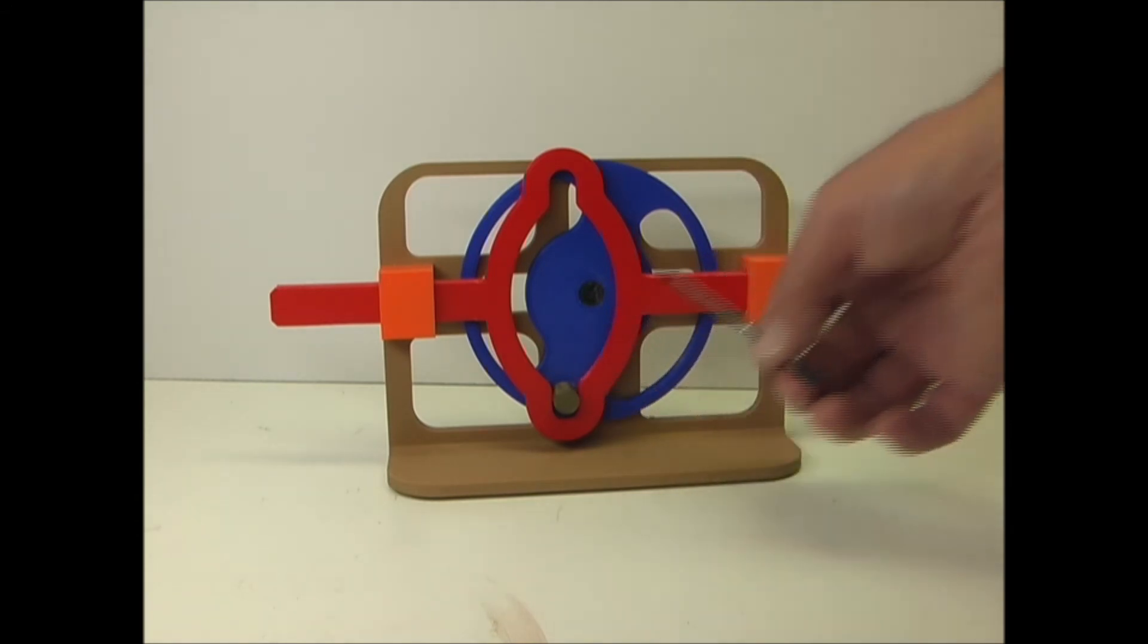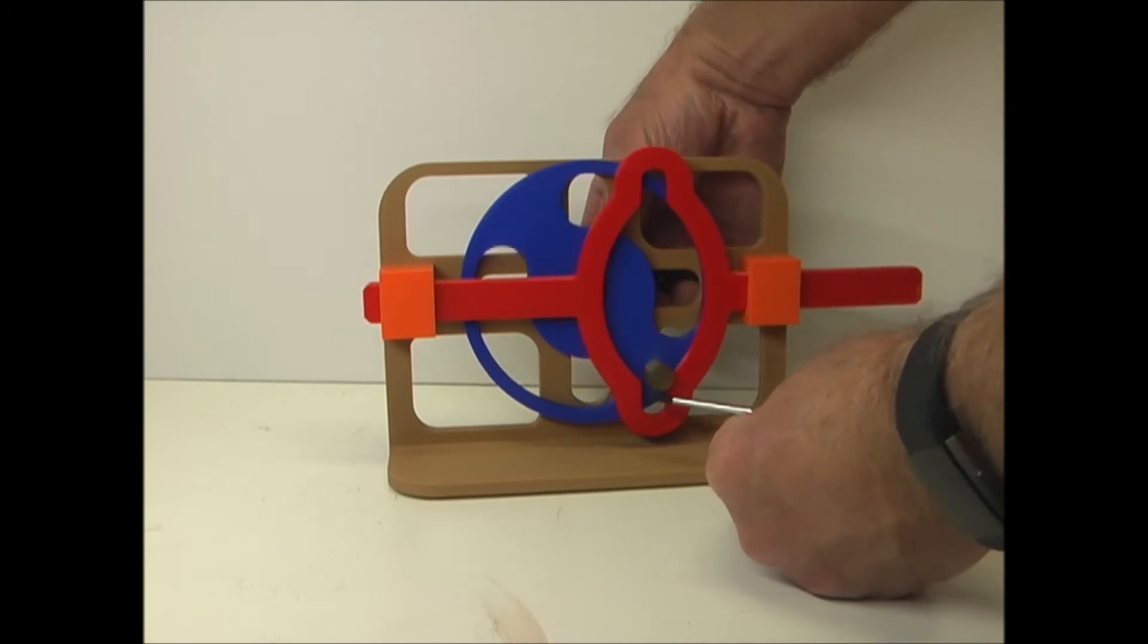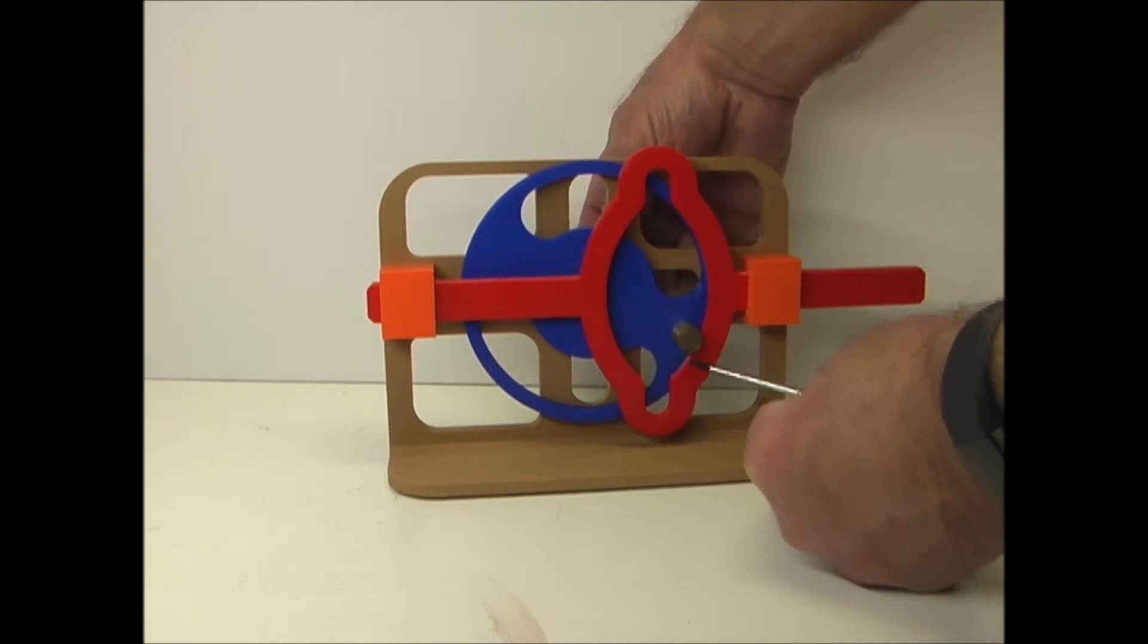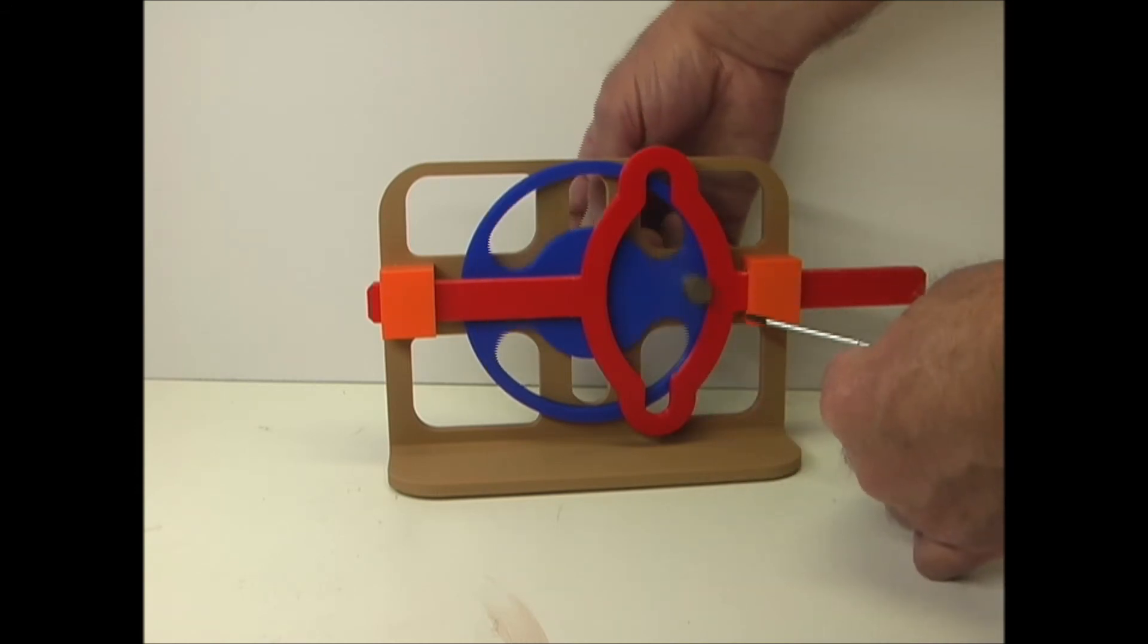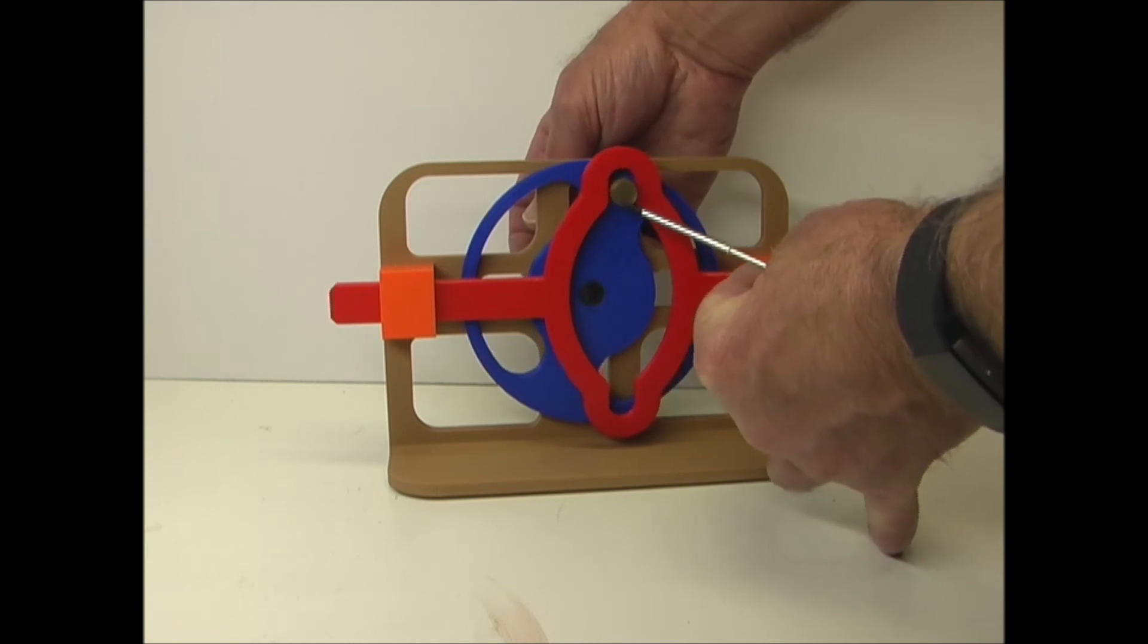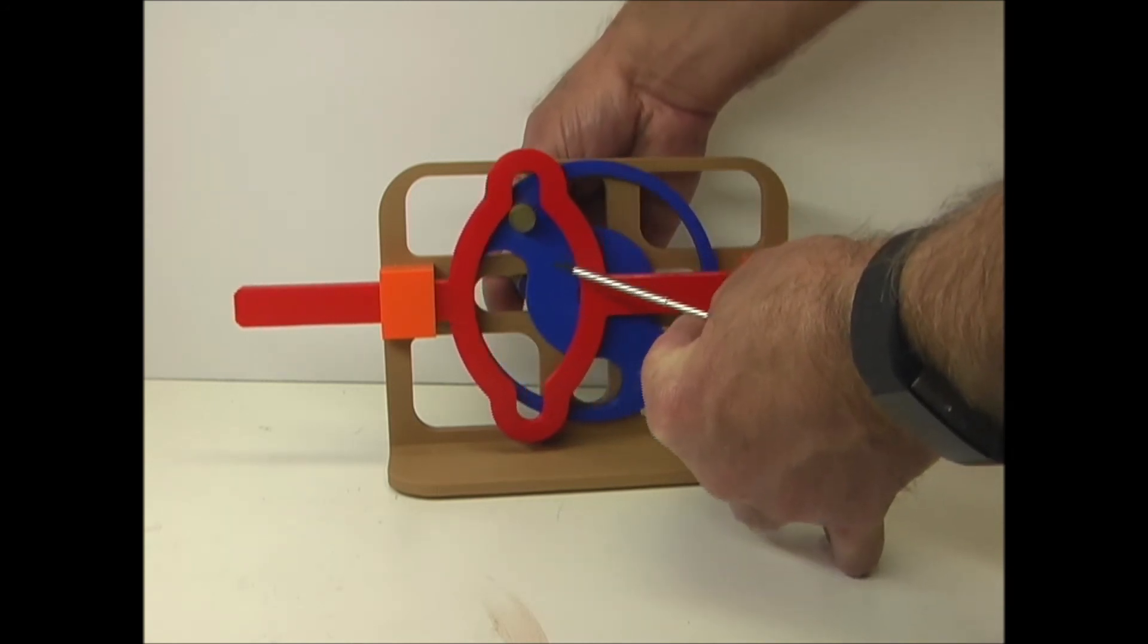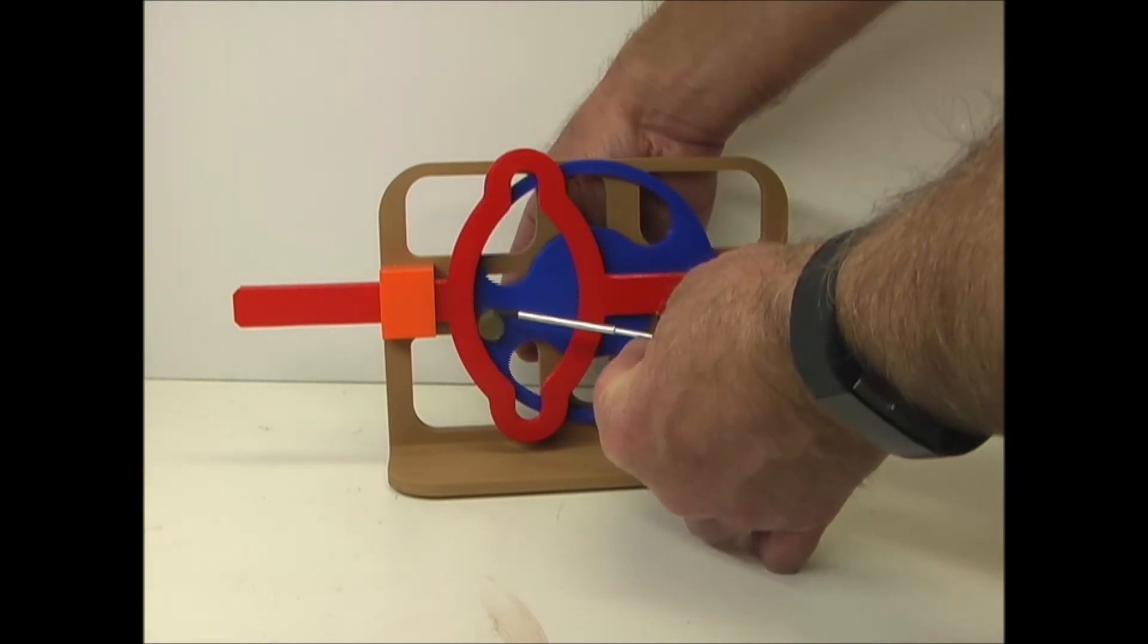This one, the pin moves through the slider, moving in one direction. And then because this is concentric with the wheel, there's no movement on this end until the pin reaches the top, engages, and moves it in the other direction. And then again, there's no movement on this end.